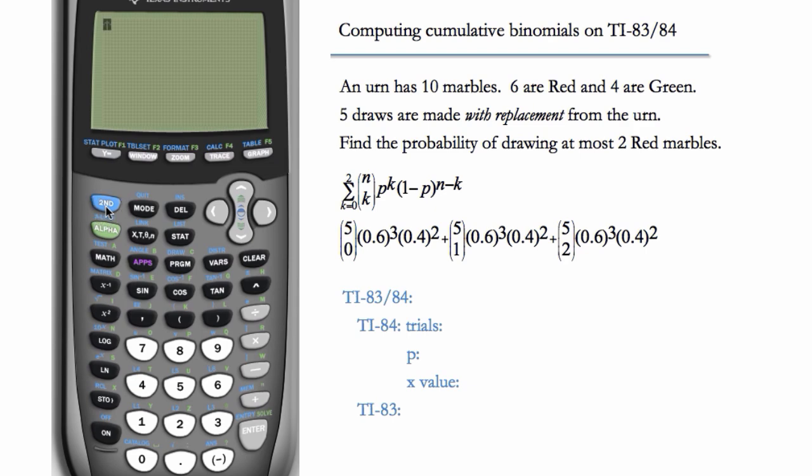We'll go to second vars, which is distribution, down to binompdf, and we have to enter trials, it's five, p is 0.6.